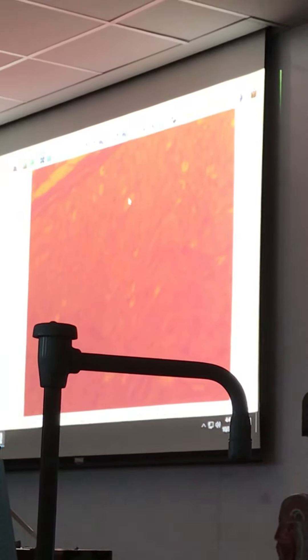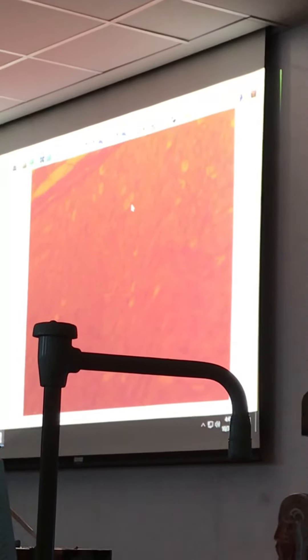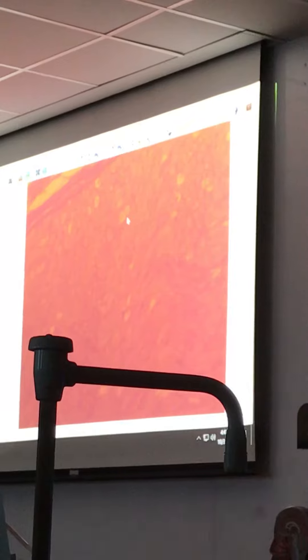And this myelin sheath is coming together right here to form the node of Ranvier right here. So in the exam, I would give you something like this, which is nice and clear.